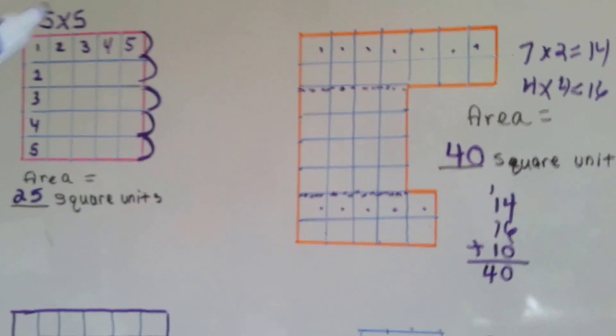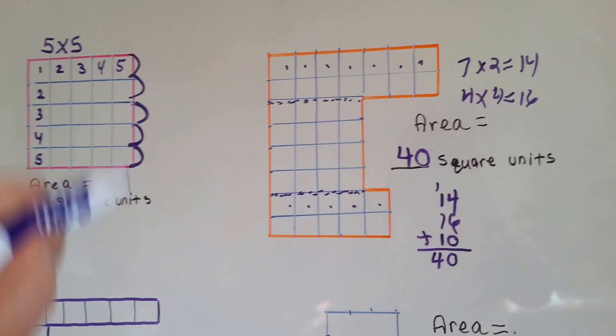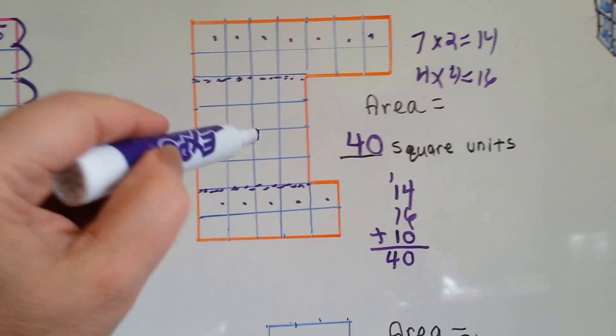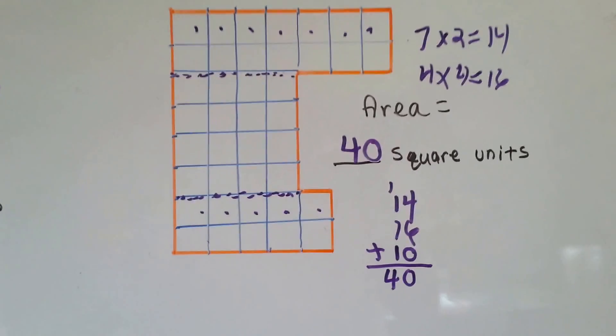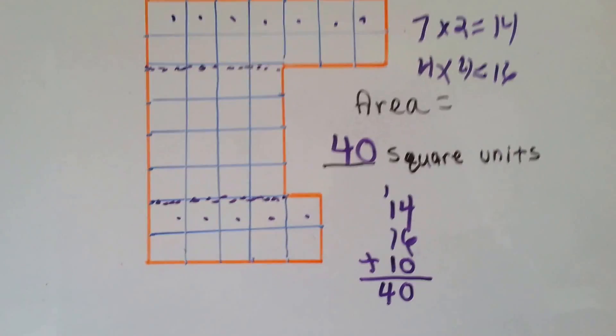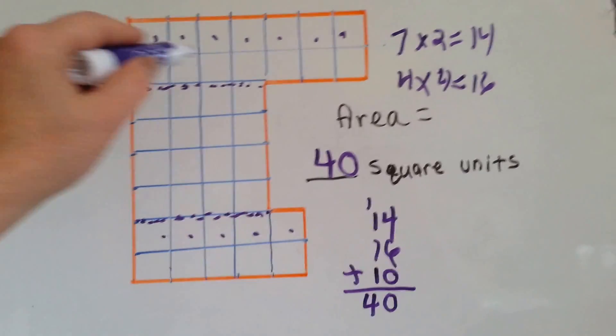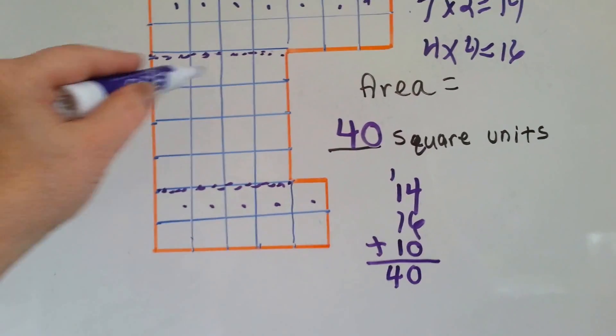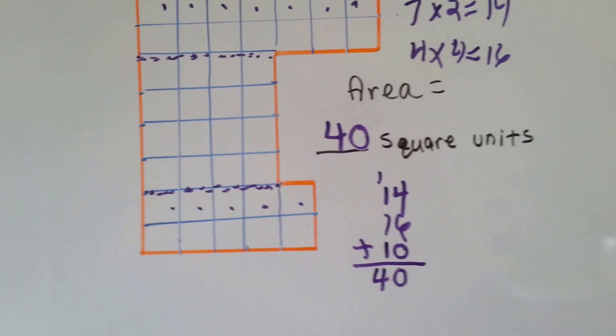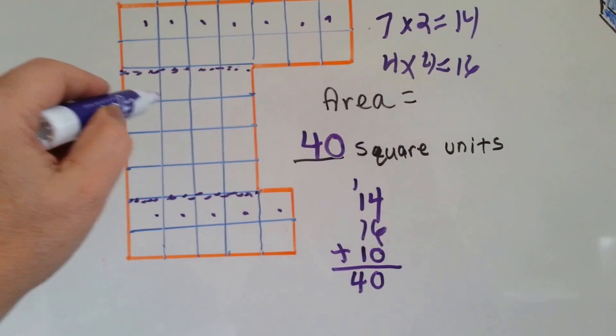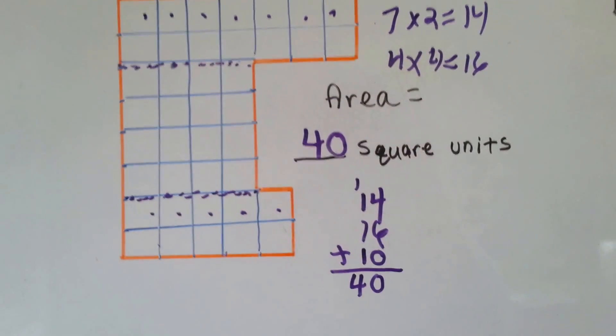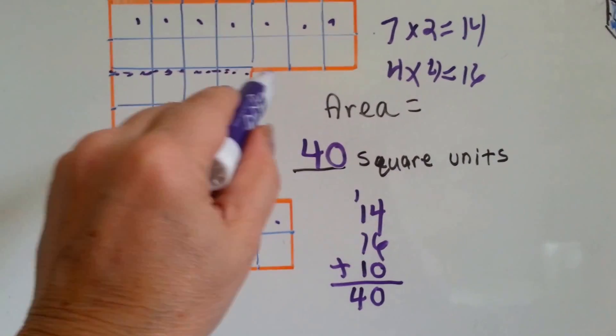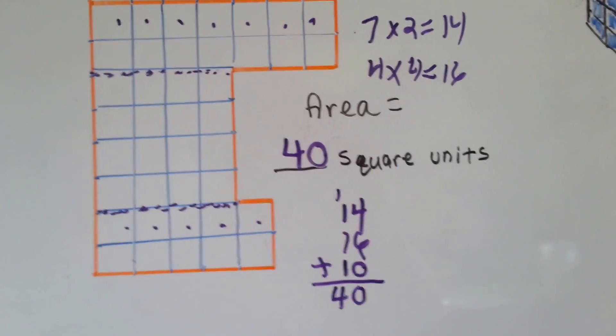Now remember, we weren't able to just do length times width like this one, because it was all full. This one's got a missing space here. So what we did was we broke it into sections and did it that way. Now we didn't even have to do times table. We could have just added up, you know, 7, 8, 9, 10, 11, 12, 13, 14. We could have done it this way and counted each one of these separately. It's just a little quicker to go like this and like this with the length and the width and multiply it and then get the amount.